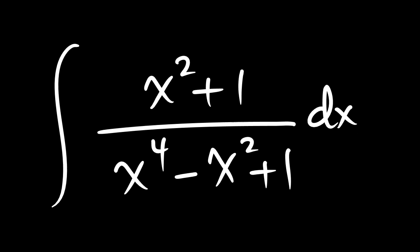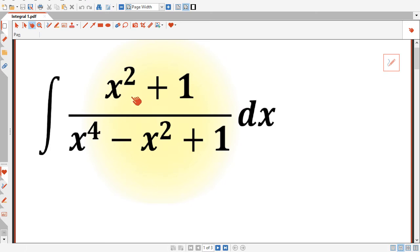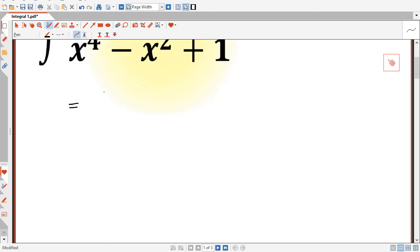Okay, so now to solve this integral, I will start by dividing both the numerator and the denominator by x squared. So that's equal to the integration of (x² + 1)/(x⁴ - x² + 1) dx. Dividing both the numerator and denominator by x squared will give us (1 + 1/x²) divided by...